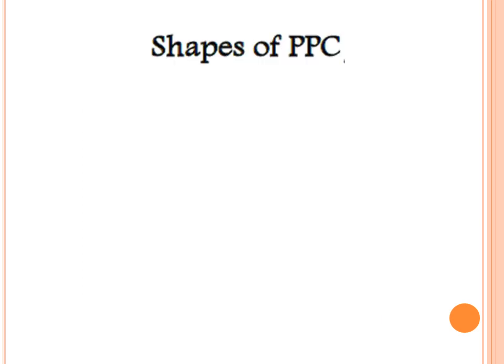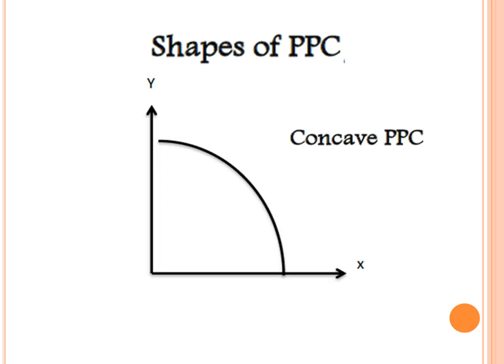Let's now turn to the shapes of the production possibility curve. We have three different shapes. The first one is the concave curve. It indicates that the opportunity cost of producing any good is increasing along the curve. So, the concave production possibility curve indicates that the opportunity cost of producing X in terms of Y is increasing, or the opportunity cost of producing Y in terms of X is increasing along the curve.